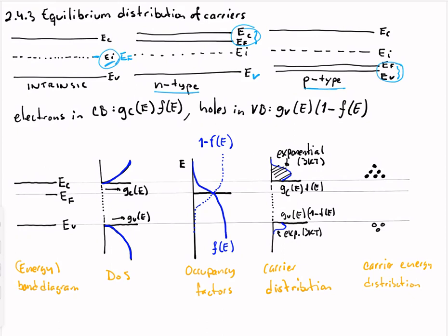We can talk about the quantity of electrons in the conduction band with this product, and we can talk about the holes in the valence band with this product. So we can talk about the electrons in the conduction band with this product, and the holes in the valence band with this product.